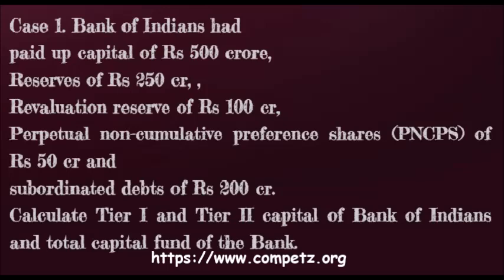To calculate Tier 1 capital of Bank of Indians, we require paid-up capital plus reserves plus PNCPS (Perpetual Non-Cumulative Preference Shares). That equals 500 plus 250 plus 50, which is equal to 800 crore. Therefore, the Tier 1 capital of Bank of Indians is 800 crore.